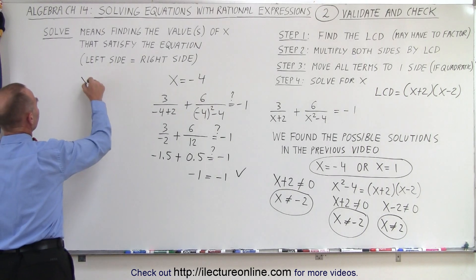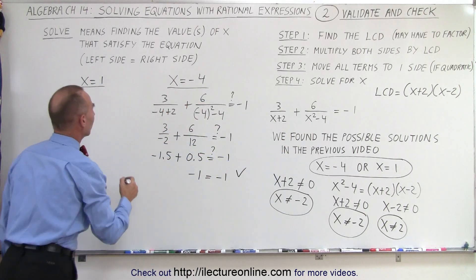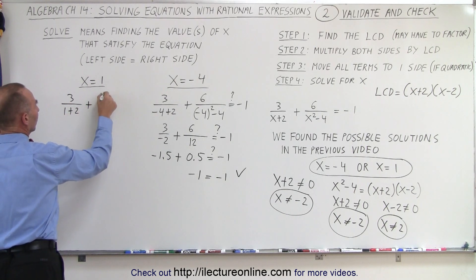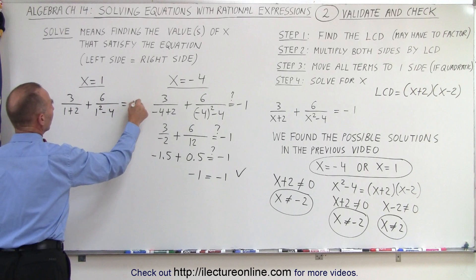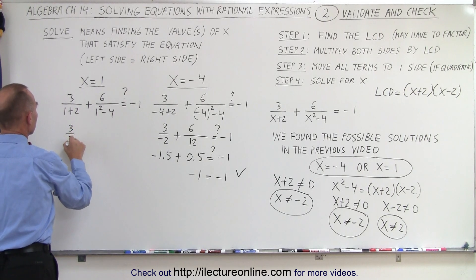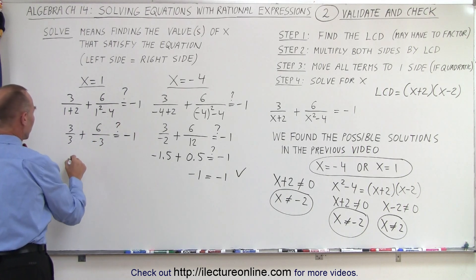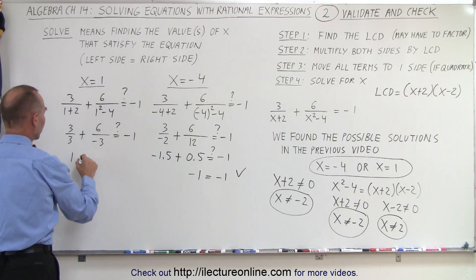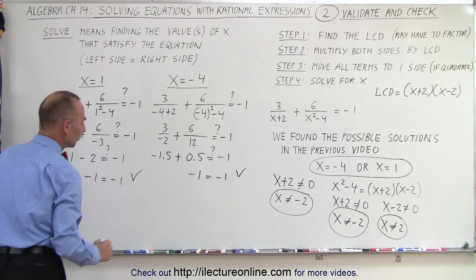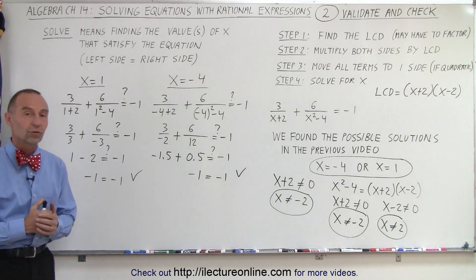Next, we're going to try x equals 1. Again, we're going to plug x equals 1 into the equation for x. That gives us 3 divided by 1 plus 2 plus 6 over 1 squared minus 4 equals negative 1. 3 divided by 3 plus 6 divided by 1 minus 4, what's negative 3, equals negative 1. Simplifying, we get 1 plus 6 divided by 3 is negative 2. That means negative 2 equals negative 1. And sure enough, negative 1 equals negative 1. So we can see that both solutions, x equals negative 4 and x equals 1, satisfy the equation. They're both solutions to that equation.